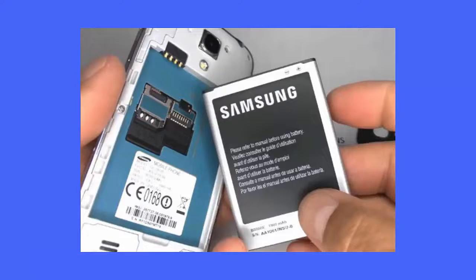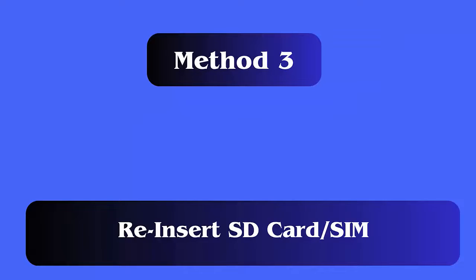Method 2: Reinsert battery. For a removable battery, first open the back cover of your phone and remove the battery. Allow the battery out of the device for 5 to 7 minutes. In the meantime, long press the power button to discharge the residual from the phone. After that, insert the battery once again and check if the error is fixed.